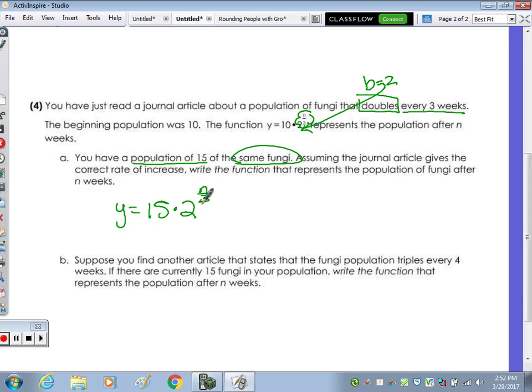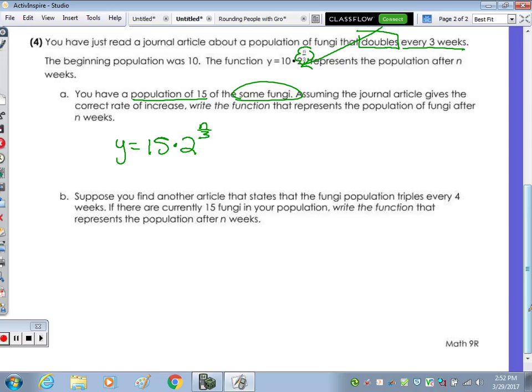In part B, it says, suppose you find another article, but this time the fungi population is going to triple every four weeks. So it's going to change a couple things here. We currently have 15. What's the function? It's going to triple. So that changes something. And this time it's every four weeks. We still have 15. Anyone give me the equation? Over four. Good. B value changes, and now it's going to be over four weeks.